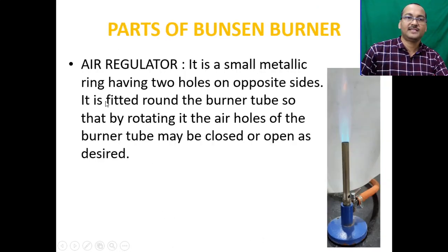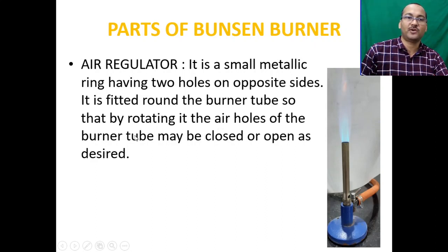Next is the air regulator. It is a small metallic ring having two holes on opposite sides. It is fitted around the burner tube so that by rotating it, the air holes of the burner tube may be closed or opened as desired.